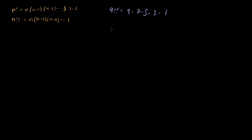For a number like 10, say 10 double factorial, we have 10 times 8 times 6 times 4 times 2. So in that case we're starting from 10 and multiplying every even number less than or equal to 10 together. And that gives us our 10 double factorial.